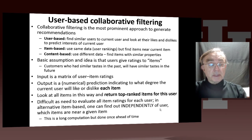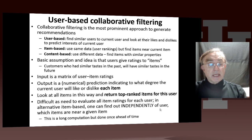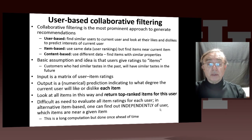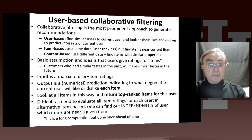The input is a matrix with rows of users and columns of items, and there's a ranking — or just a check mark — saying the user purchased the item. The output is a numerical prediction indicating to what degree a current user will like or dislike each item. It will look at all items and return the top-ranked item for the user. It's difficult, as you have to evaluate all the item ratings for each user.